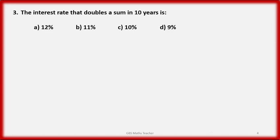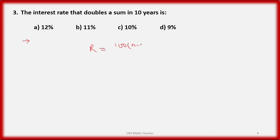Question number 3: the interest rate that doubles a sum in 10 years is — options are 12%, 11%, 10%, and 9%. In Nepali: at what interest rate does a sum double in 10 years? The formula is: r = 100 × (n − 1) / t.